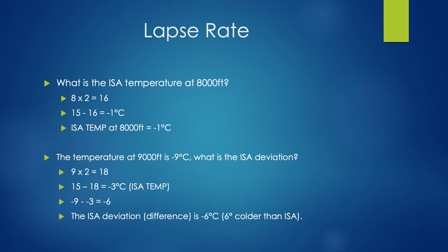Here's a couple of examples. The first question is: what is the ISA temperature at 8,000 feet? We know that for every thousand feet up, our temperature drops 2 degrees. So at 8,000 feet the temperature drops 16 degrees. Since ISA assumes 15 degrees Celsius at sea level, the temperature at 8,000 feet assuming an ISA lapse rate will be minus 1 degree Celsius.